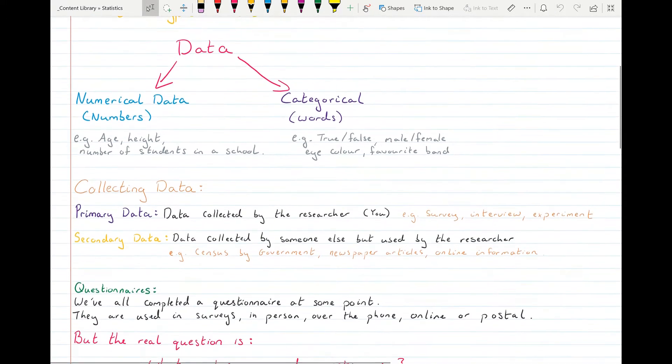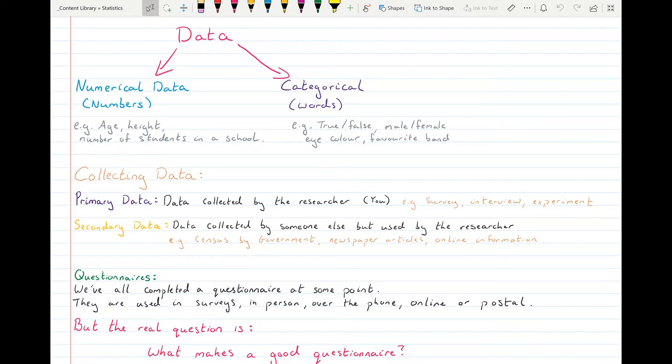How to go about collecting the data then? There's primary data, which is where you go out and collect the data yourself to then use in your statistical investigation. Or secondary data, where someone else has already gone out and collected the data, and you're just going to use that. That might be where the government have carried out a census, or you're reading a newspaper article, or you've searched online for information.